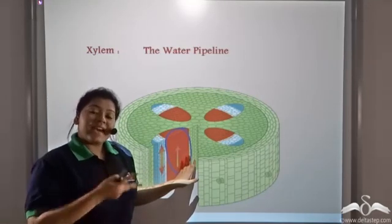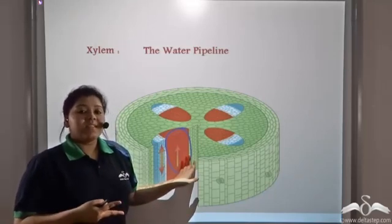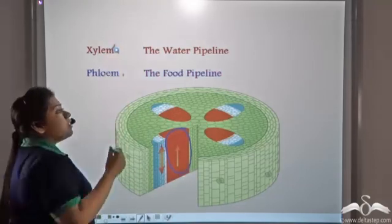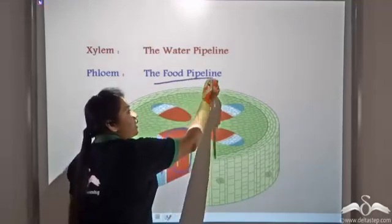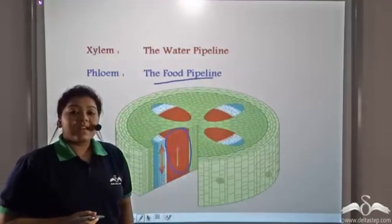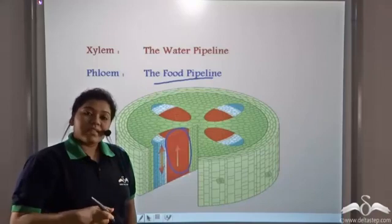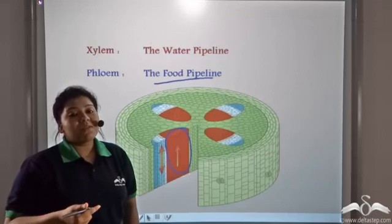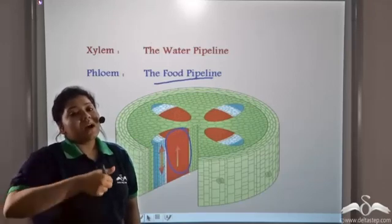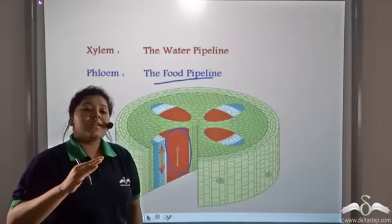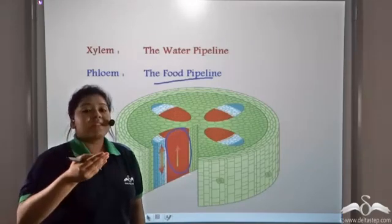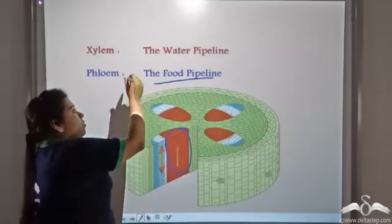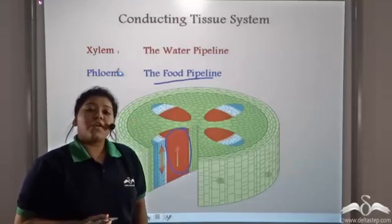Now there is a second pipeline present in plants. It is known as the phloem. Phloem is the food pipeline of the plant. It conducts food downwards from the leaves to the root, and also transports food upward to the portion of the plant situated above that leaf. So the xylem and the phloem together form the conducting tissue system of the plant.